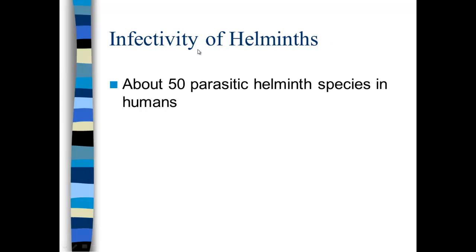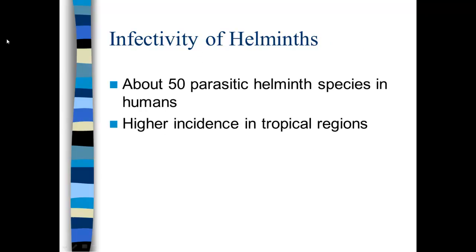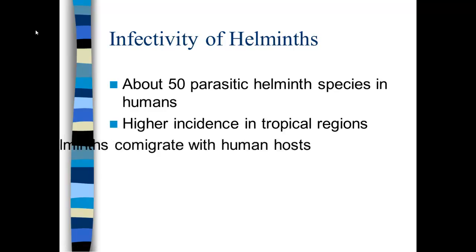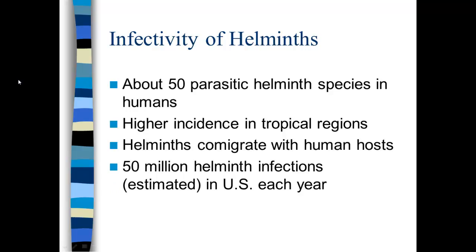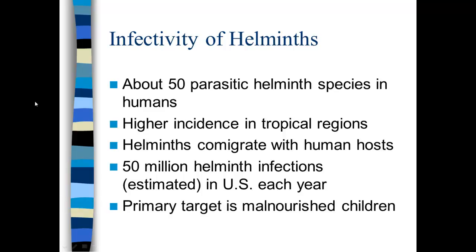There are about 50 parasitic helminth species in humans. These worms grow better in tropical regions because cold weather is not something they tolerate. But they do co-migrate with human hosts, so if a human is infected with helminths, there can be helminths wherever that human being goes. There are about 50 million helminth infections per year — that's a lot considering our population is 300 million. The primary target, like I said, is malnourished children.